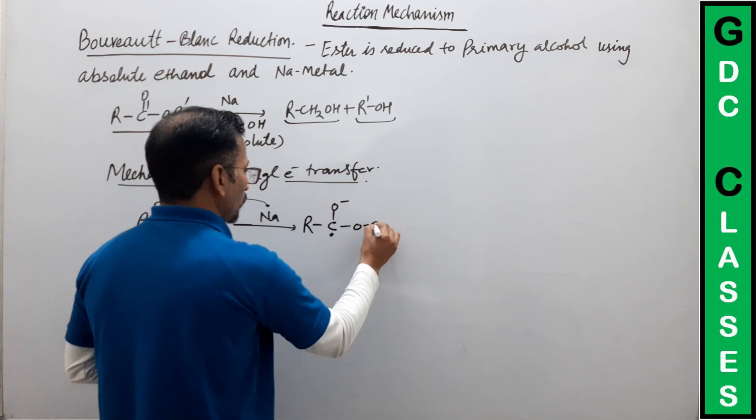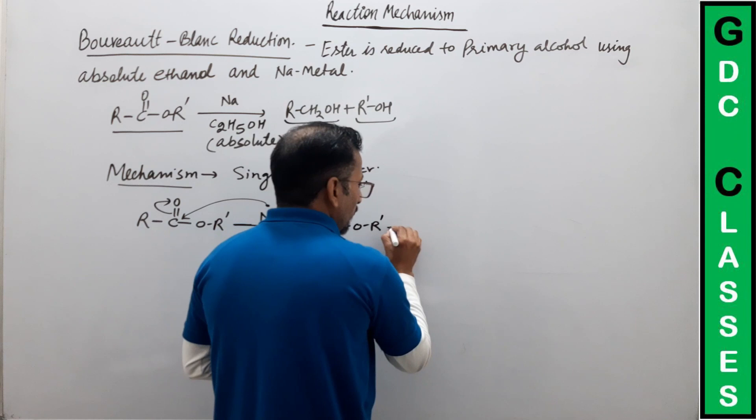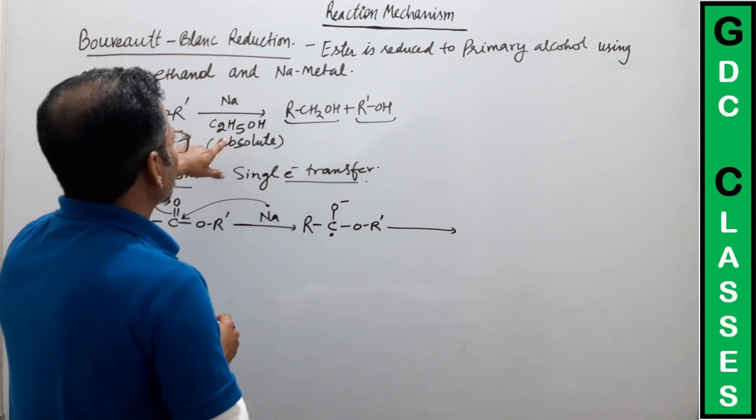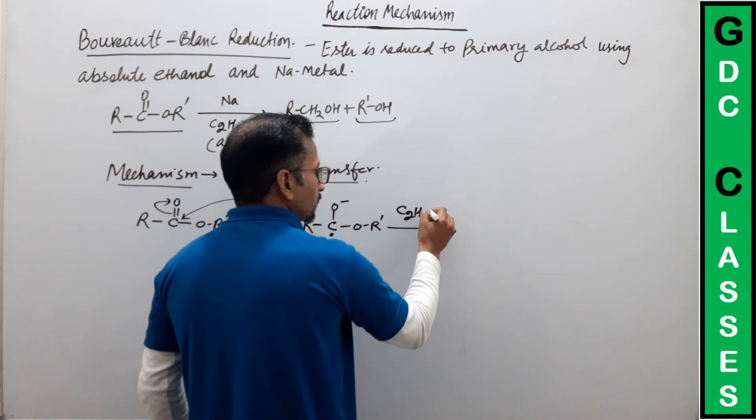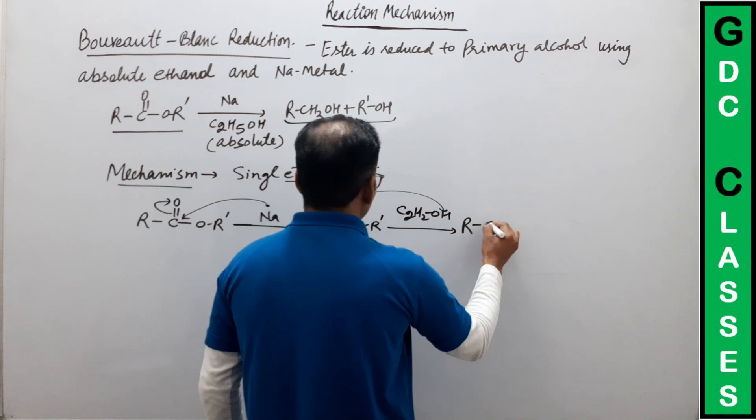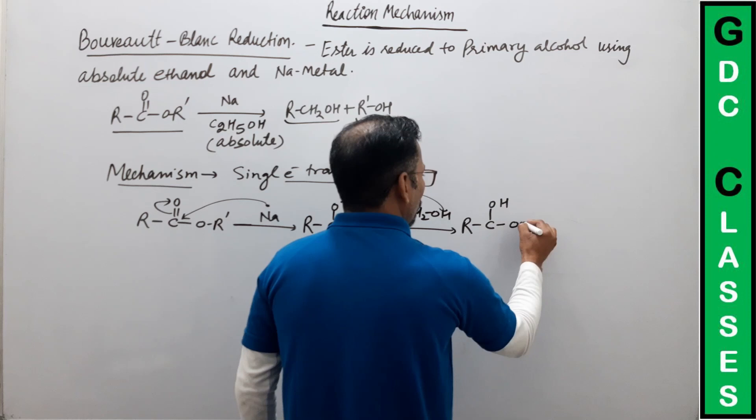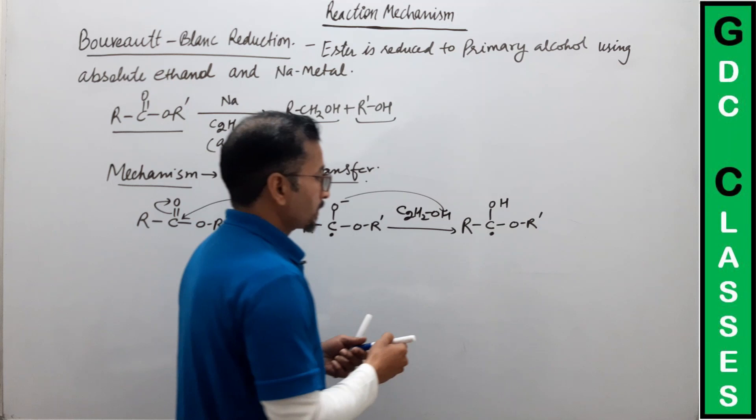यह हमारे पास product आ चुका है। Next step में ethanol से proton आएगा। यह radical इस H को pick करेगा। Next product हमारे पास बनेगा: COH और O-R', और यहां पर एक radical बना हुआ है।